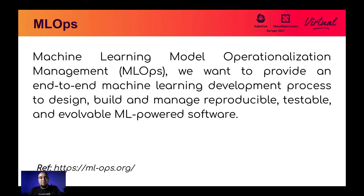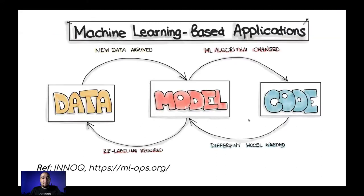MLOps refers more to the automation of model generation — designing, building, and managing the processes that generate a model and get predictions in order to push your ML-powered software. In the context of MLOps, it contains the data, the model, and the code. If the data changes, you have to regenerate the model; maybe you also modify your code. This includes the whole cycle of MLOps.